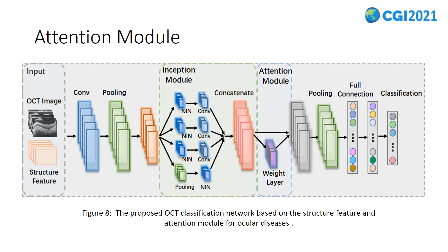Figure 8 is the proposed OCT classification network based on structure features and the attention module for ocular diseases. With the rapid development of deep learning technology, the convolutional neural network has shown unparalleled effects in high-level semantic analysis tasks such as image classification and segmentation. In this paper, we implement the OCT classification task based on the classical convolutional neural network Inception. The input of the network consists of two parts: structural prior features (DAISY) and OCT image features. The Inception layer consists of convolutional layers of sizes 3, 5, and 7, a pooling layer of size 3, and a NIN layer for simplifying the network parameters. The network acquires feature information at different scales while increasing the perception field. We also use the attention module including spatial and channel attention to enhance the ability of the network to extract important features.